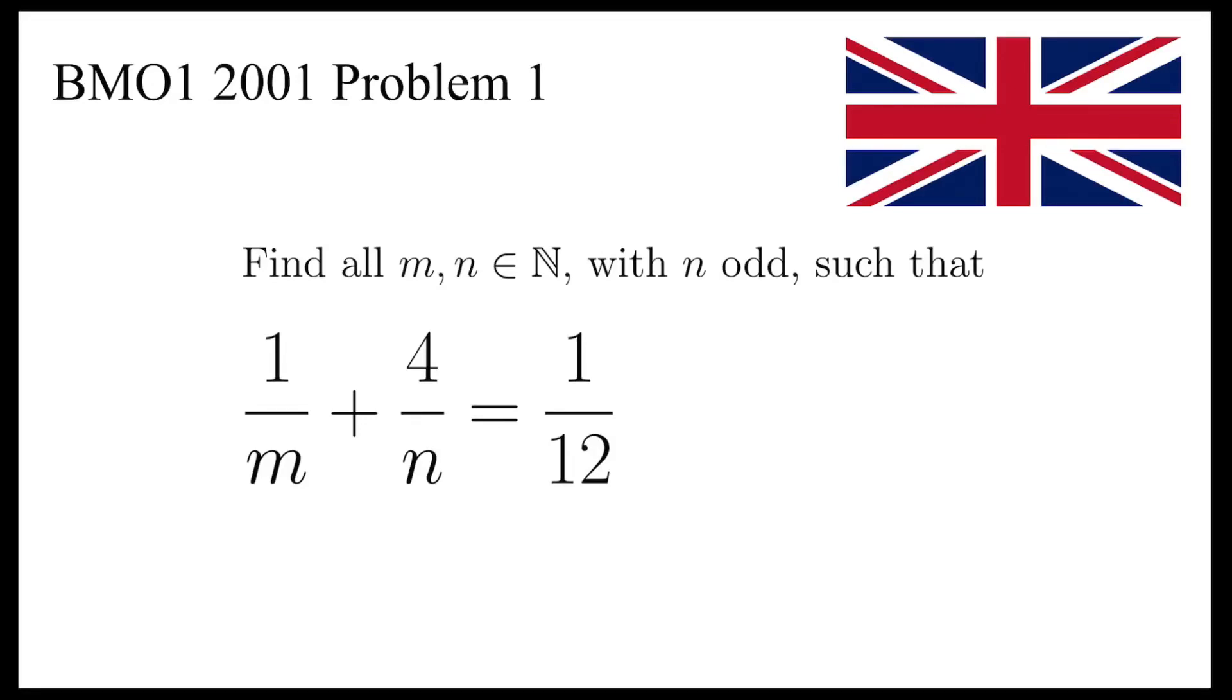In this video, we are going to find all natural numbers m and n, with n being odd in particular, such that 1 over m plus 4 over n equals 1 over 12.